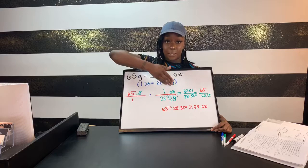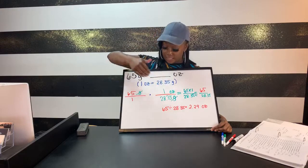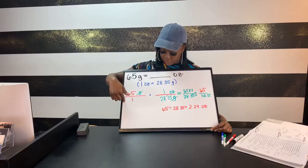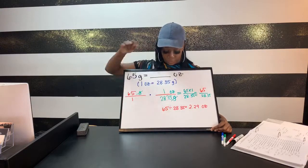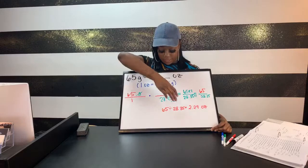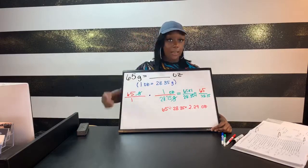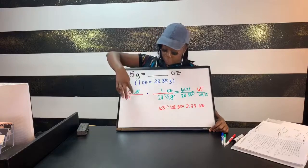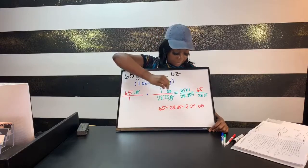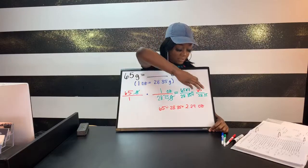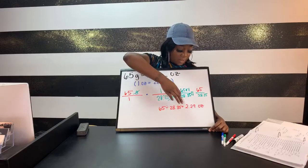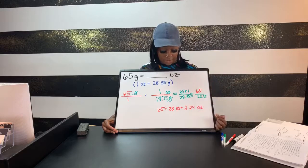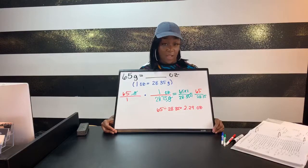The denominator in my second ratio needs to cancel out, so I have 65 grams over one times one ounce over 28.35 grams — based on the key. The grams cancel out, leaving ounces. Then we do 65 times 1 on top and 1 times 28.35 on the bottom: 65 on top, 28.35 on the bottom. Dividing gives us 2.29 ounces.